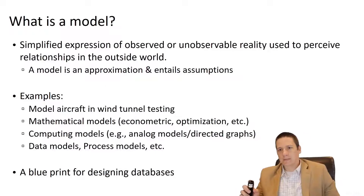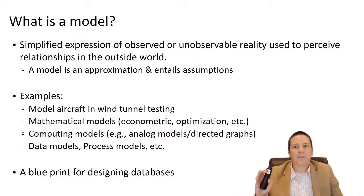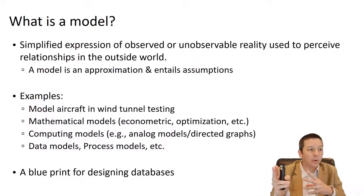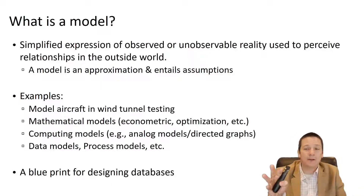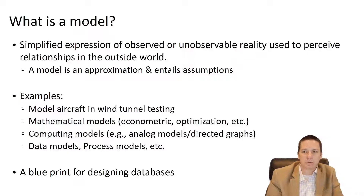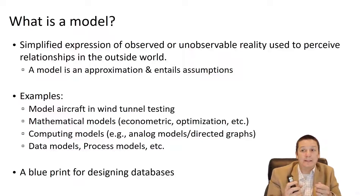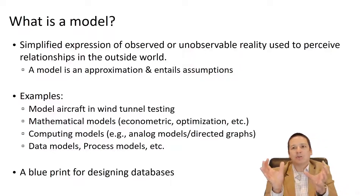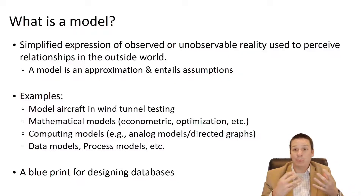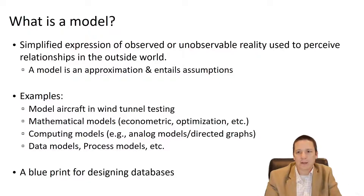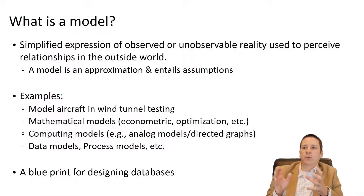The usefulness really comes from this idea that a model is a simplified expression of an observed or unobservable reality, used to perceive relationships in the outside world. I like this quote almost as much as the other one — there's a lot to unpack here. A simplified expression of observed or unobservable reality. This model of an airplane represents an observed reality — a physical thing that exists — and we can simplify it to get a better idea of how it works: make it smaller, put it in a wind tunnel. But what is an unobservable reality?